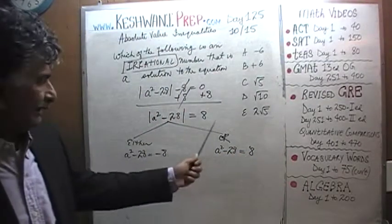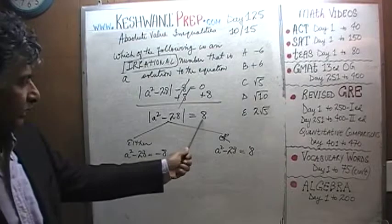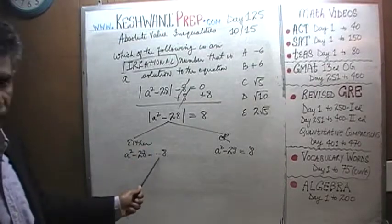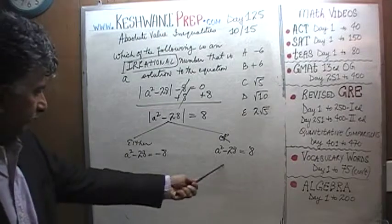Because absolute value of 8 is 8 and absolute value of negative 8 is 8. Absolute value of this quantity, a squared minus 28, has to be negative 8 or positive 8.